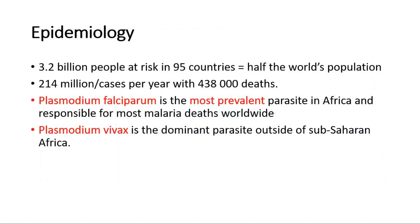For the epidemiology of malaria, around 3.2 billion people are at risk in 95 countries, which is almost half of the world's population, and every year there are millions of cases with a lot of deaths. In Africa, the most prevalent parasite is Plasmodium falciparum, which is also the most severe type causing the most deaths worldwide, whereas the dominant parasite outside of Africa is Plasmodium vivax.